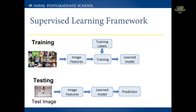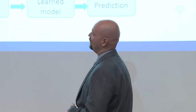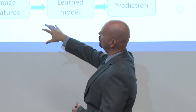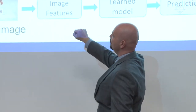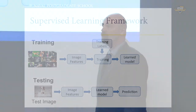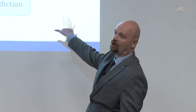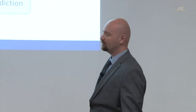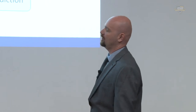Once we learn a model, we've finished the training phase. We then move to a testing phase, also called inference, where we provide a new example for which we don't know the label. For that example we go through the same transformations to extract image features, apply the learned model, and get an output prediction — in this case a class: is it a dog or a cat? In this example the correct class would be dog.